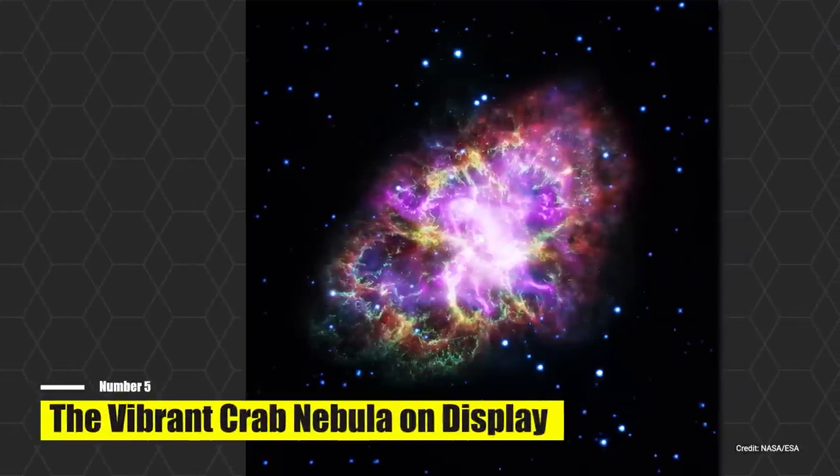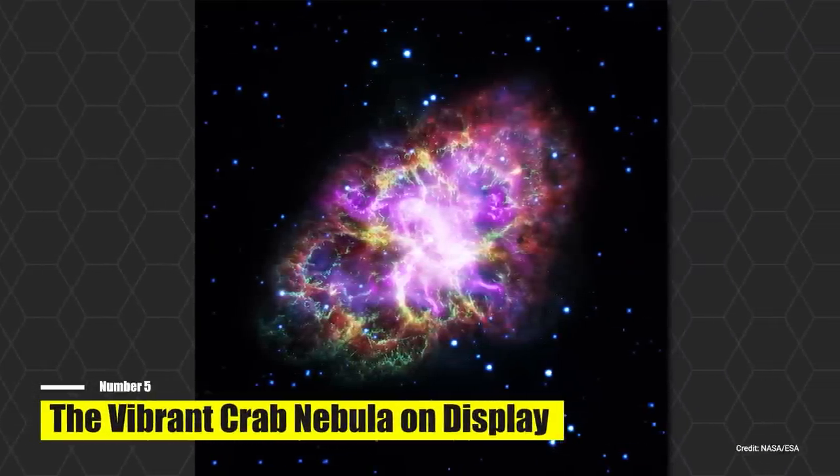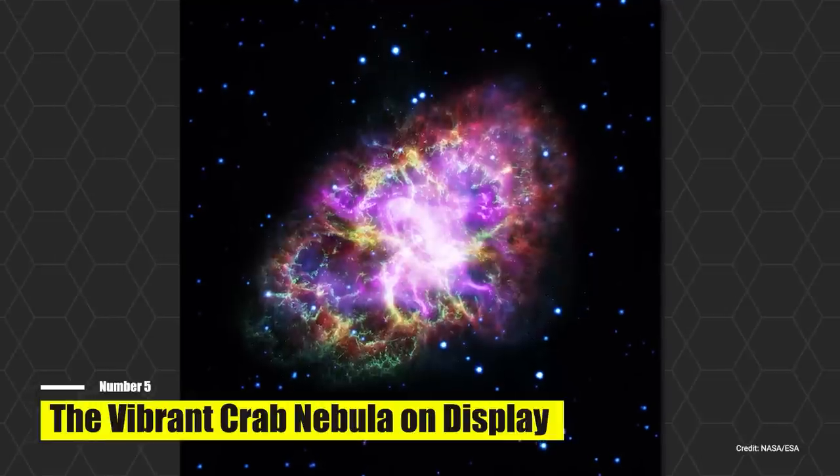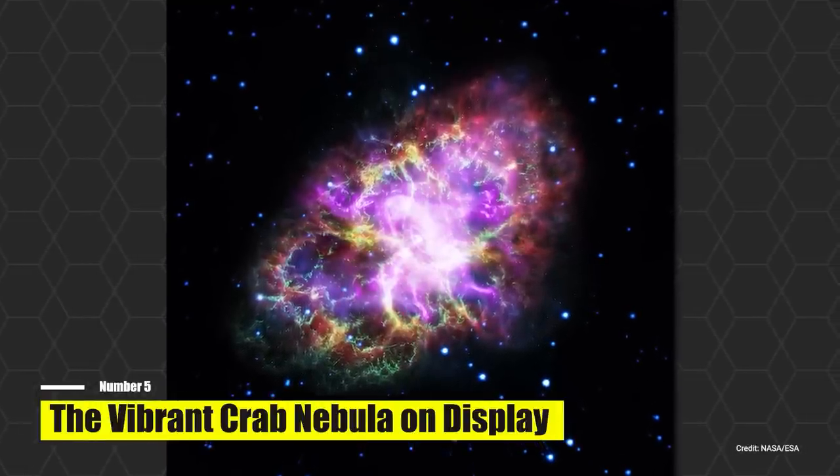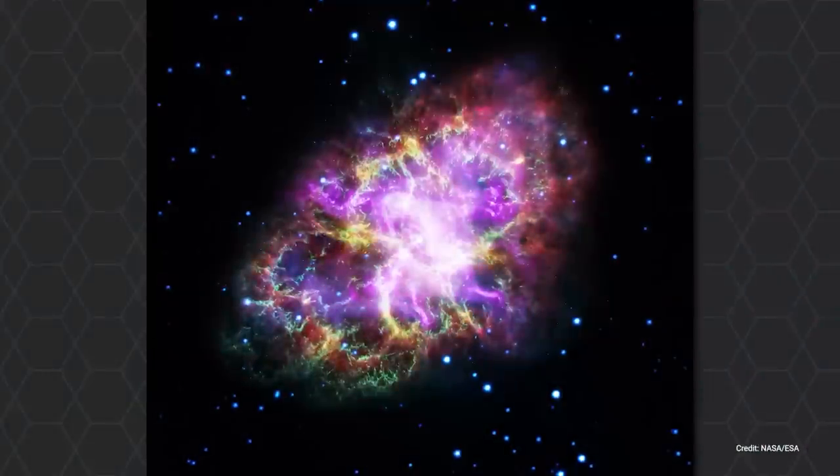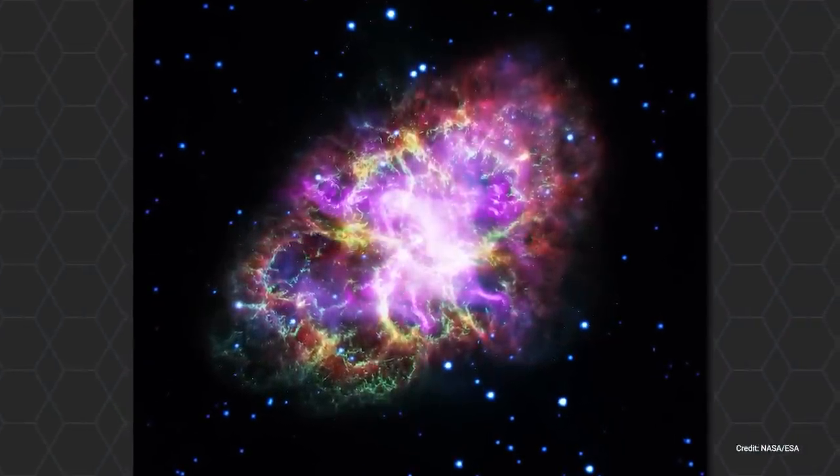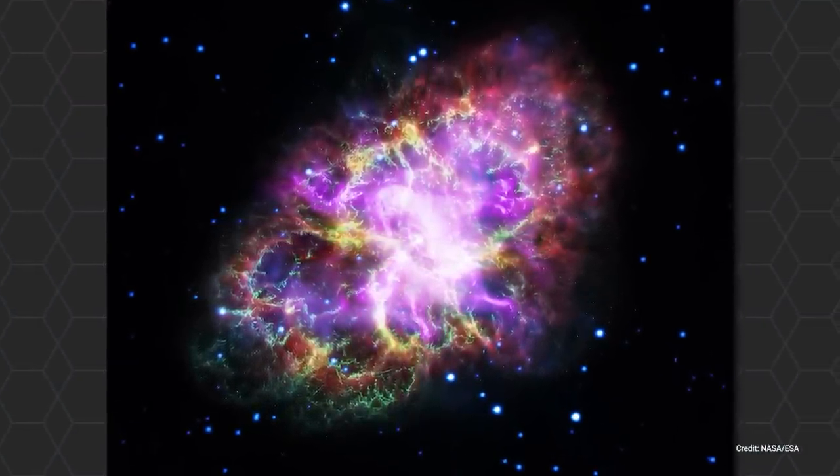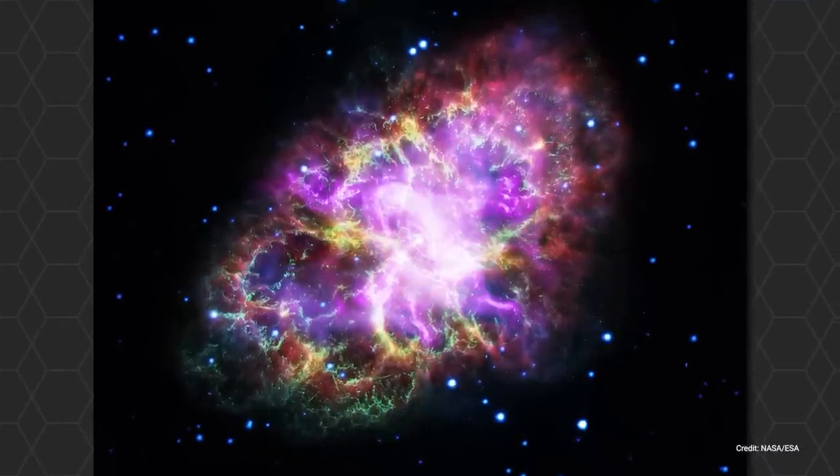Number 5, the vibrant Crab Nebula on display. Feast your eyes on this stunning new image of the Crab Nebula, illuminated in a dazzling array of neon hues. This distinctive image is the result of merging data gathered from telescopes that monitor a broad range of the electromagnetic spectrum, from radio waves all the way to X-rays.